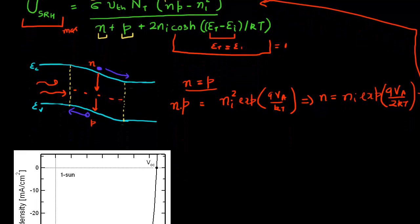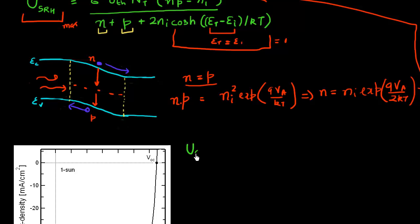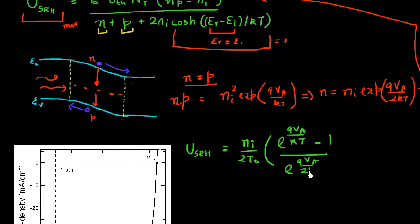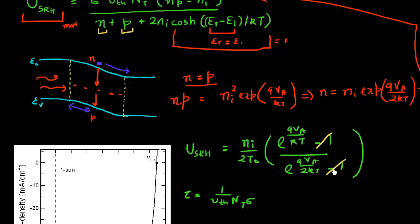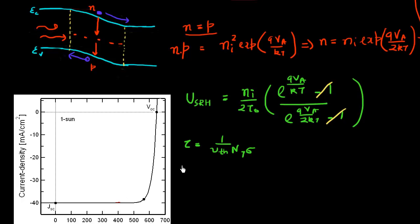Substituting all that into the equation — NP as NI² exp(QVA / KT), and N and P by that formula — I get a relationship describing the recombination rate. In the numerator I get exp(QVA / KT) minus 1, and in the denominator exp(QVA / 2KT) minus 1, where tau bunches together the thermal velocity, the number of traps, and their capture cross section. When VA is large, the exponential terms dominate over 1, which gives the maximum Shockley-Reed-Hall recombination rate equal to NI / (2τ) × exp(QVA / 2KT).